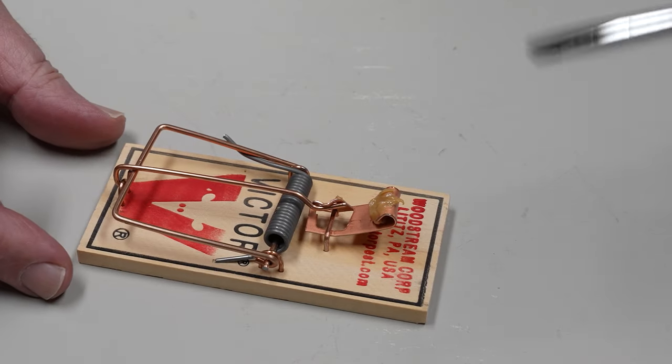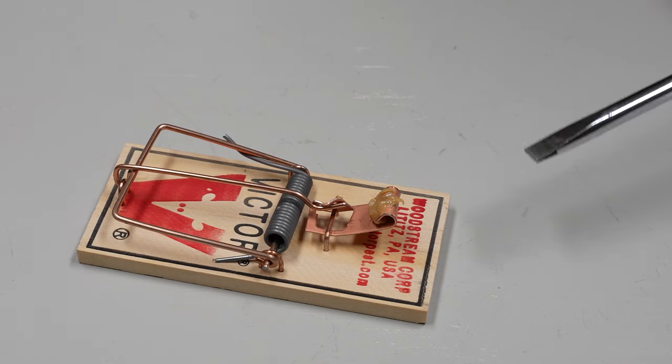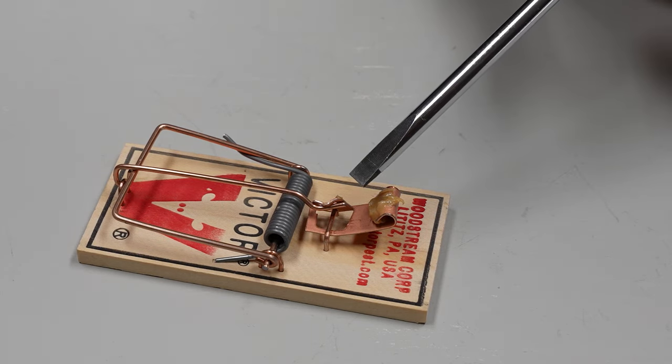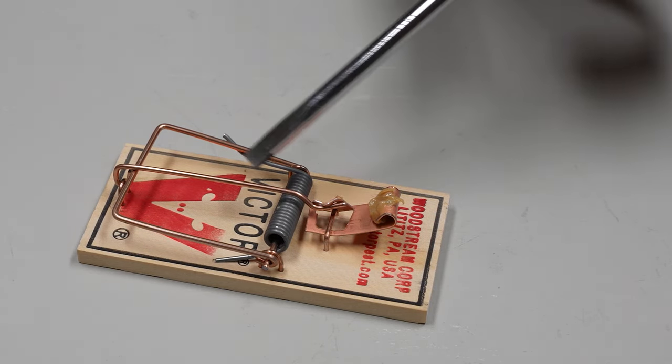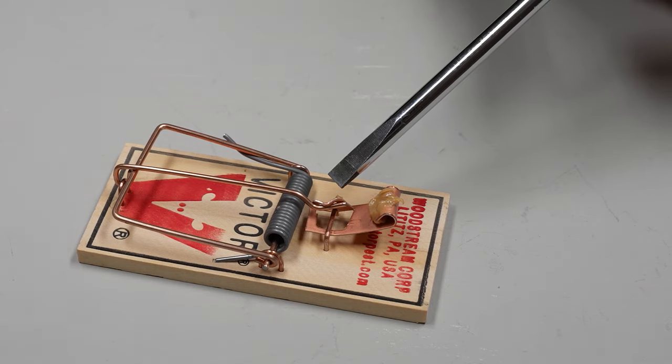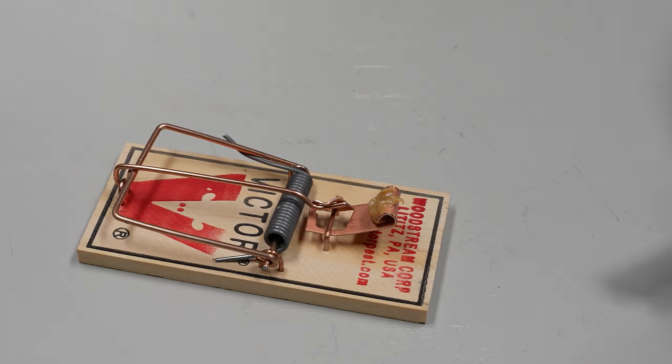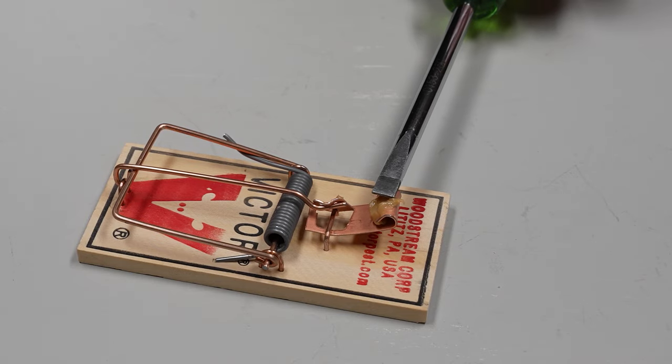To give you an example of how easy this thing is to trigger, if any movement makes this arm come off of this bait paddle, it will snap shut. We move this just a little.